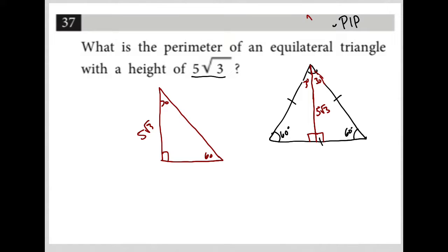And from that right triangle, I should be able to deduce that this length is 5, and this length is 10.